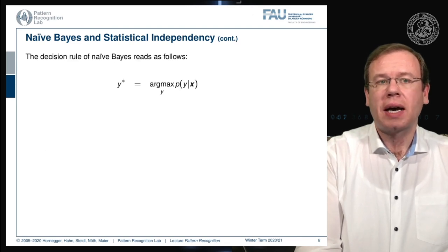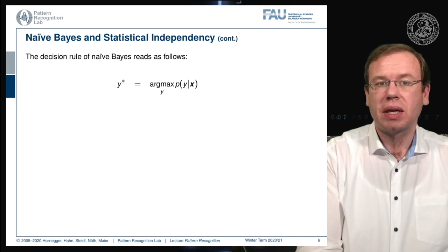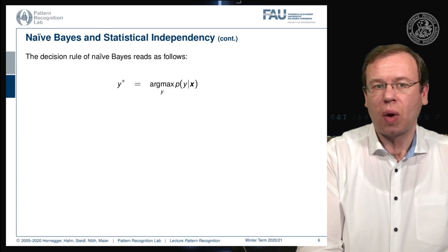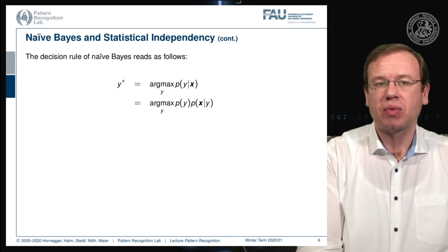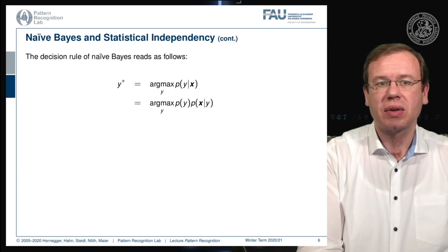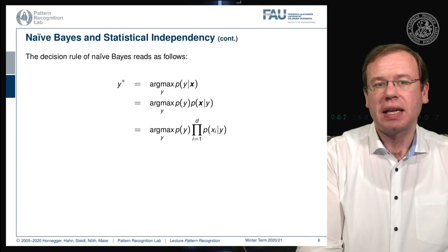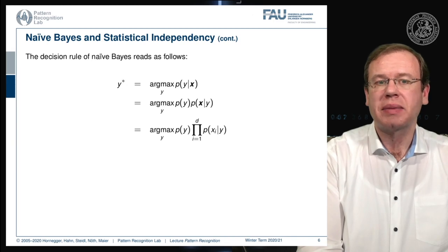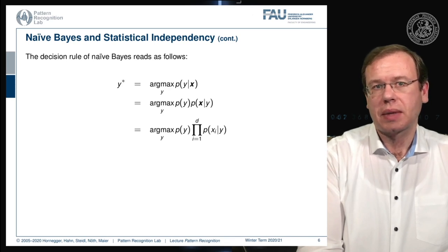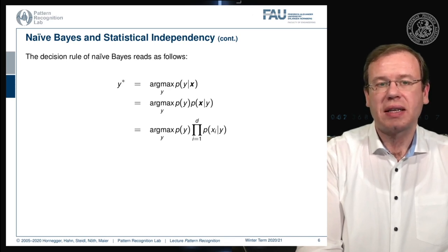If we now apply this in Bayes' rule, we still want to maximize our posterior probability with respect to y. Applying Bayes' rule, we can get rid of the prior of x, because in the maximization over y we are independent of x, so that term is not considered. We can then break this down to the prior of y times the component-wise class-conditional probabilities. This is a fairly simple assumption.